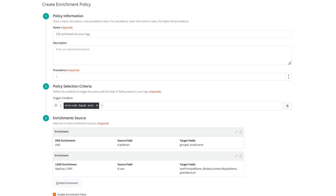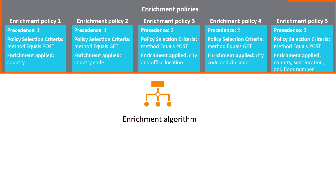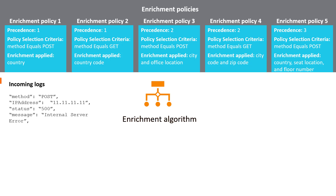In this example, first the enrichments from the DNS source will be applied and then enrichments from the LDAP source. To understand the process of applying enrichment, here is an example. Let's say we have configured these 5 enrichment policies, and here is the log entry that we are collecting.